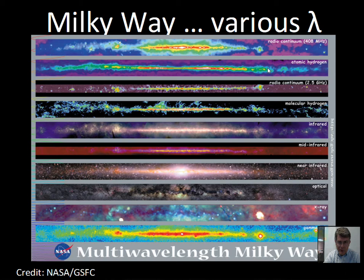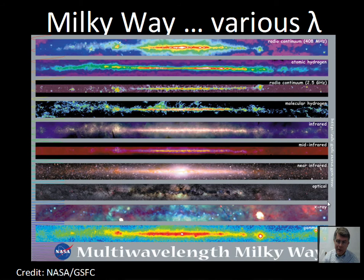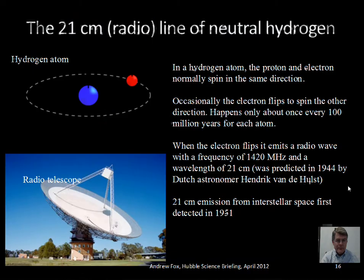All of the wavelength maps show this concentration of material in the plane of the Milky Way. Radio is useful for detecting cold hydrogen or hydrogen as a molecule. Infrared is useful in that it can see through the dust in our galaxy to a certain extent. Optical wavelengths show where stars are producing much of their light. X-rays and gamma rays reveal very high-energy processes. There are also satellites that take images in ultraviolet, giving additional information on the galaxy.